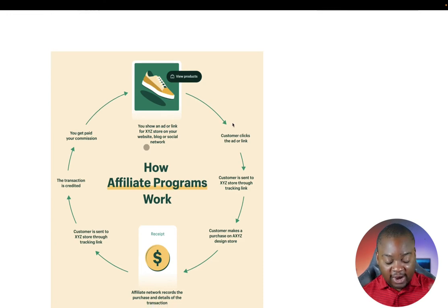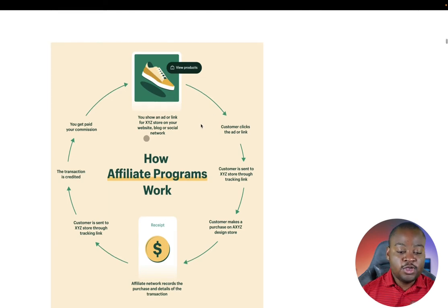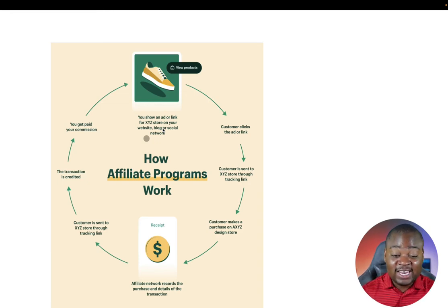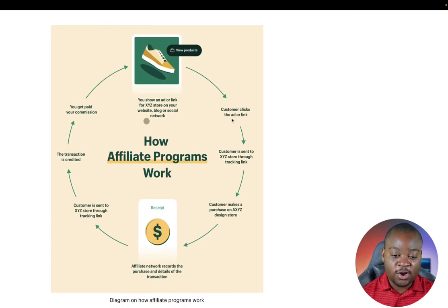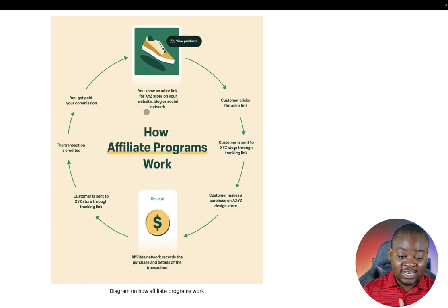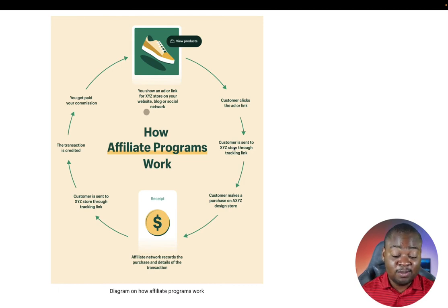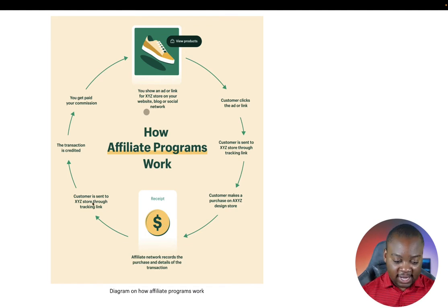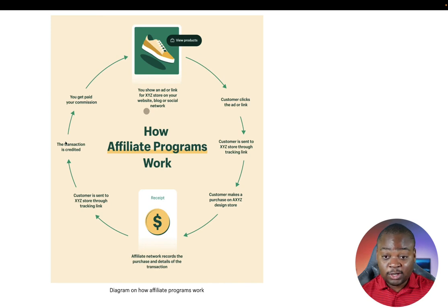Once you find that software or store you enjoy, you start creating content for it through your website, blog, or social media — you can even run PPC campaigns or Facebook ads to promote that product, or build a course and share it with others. You start getting traffic to that place. When a customer is sent there, they're sent through a tracking link which allows the website or business owner to know you're the one sending them. That's how they track that those customers are coming from you.